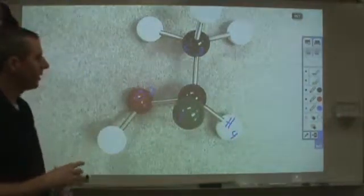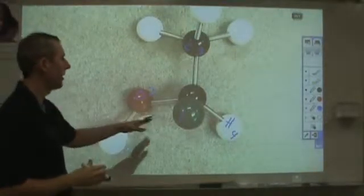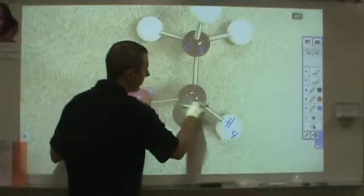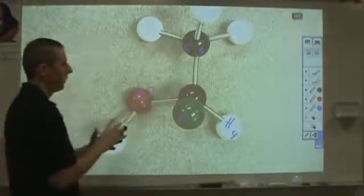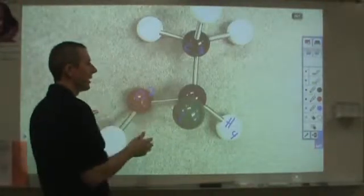So in order for me to see whether this is R or S, what I need to do is I need to orient myself where I'm looking down at the carbon with the fourth constituent as far away from me as possible. And then I want to look and see how this rotates.